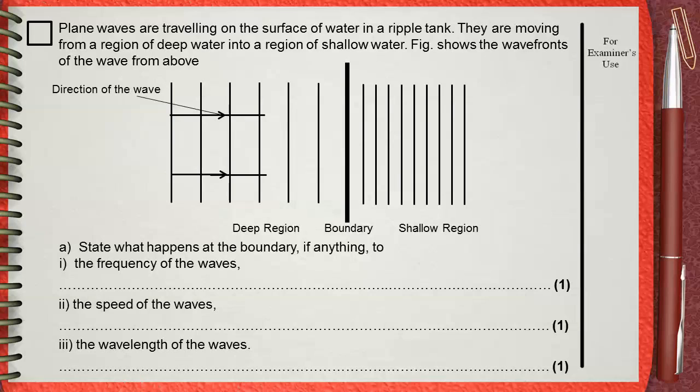A. State what happens at the boundary, if anything, to the frequency of the waves, the speed of the waves, the wavelength of the waves.